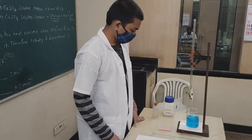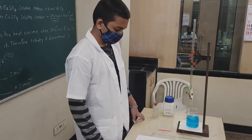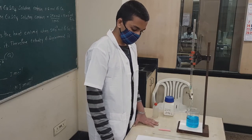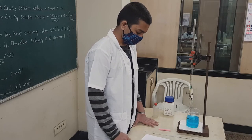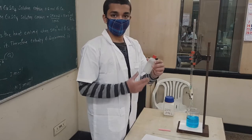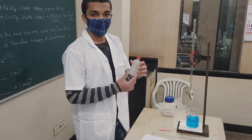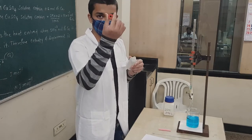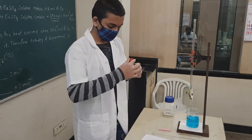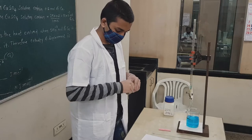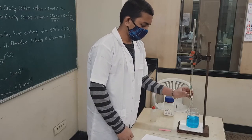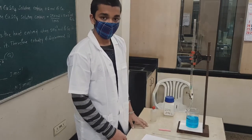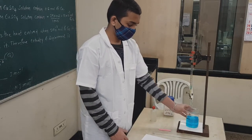We will start with the experiment. First I will show you the apparatus and then we will start the actual experiment. This is a polythene bottle with a cork on top and a hole to insert the thermometer. There is a burette along with a burette stand, and in that burette we are going to fill copper sulfate solution which is 0.2 molar.